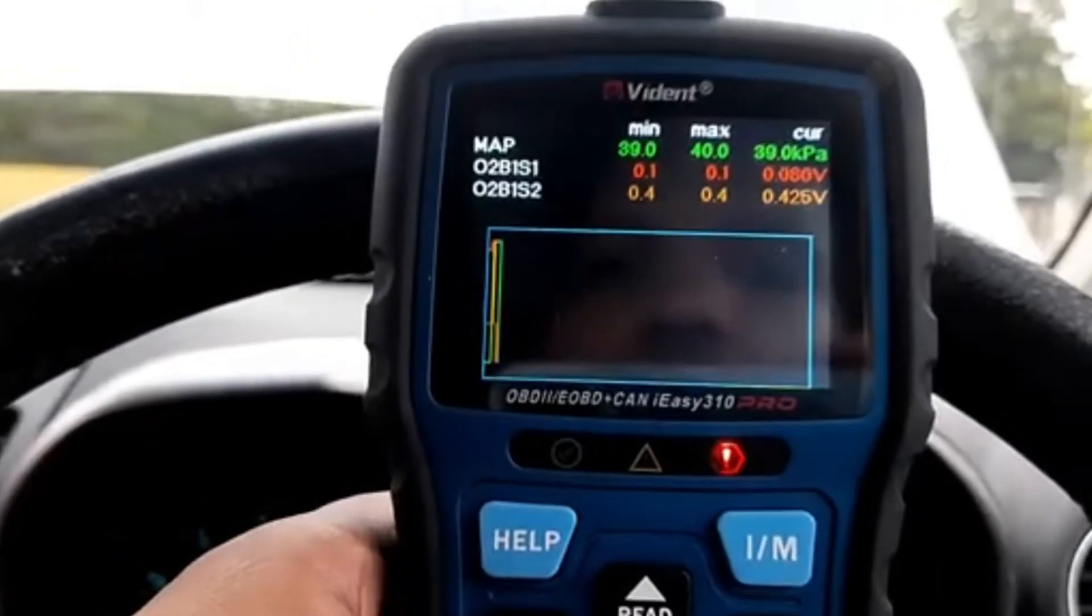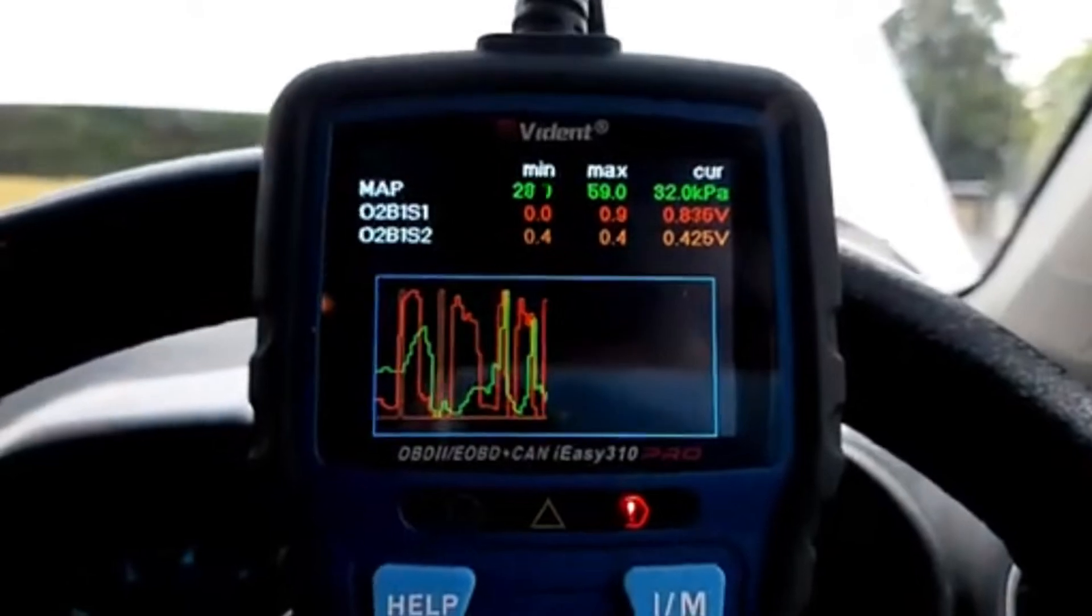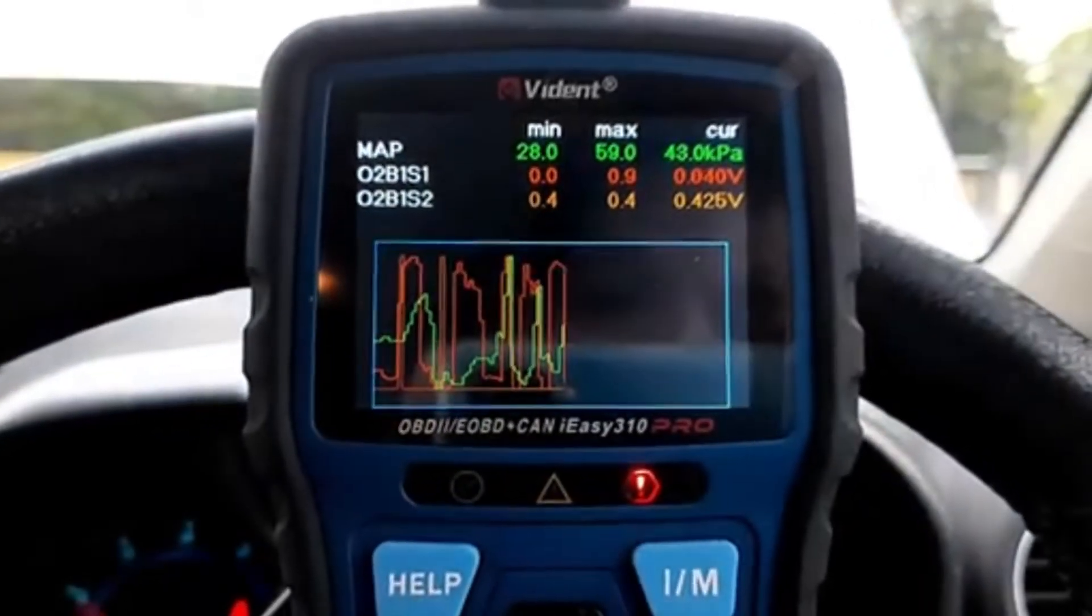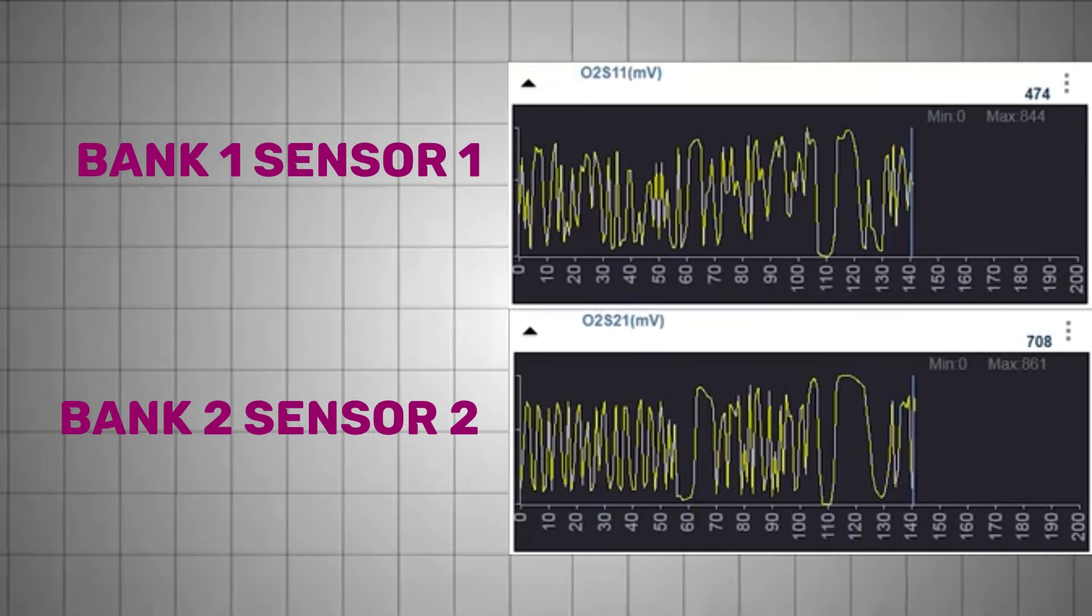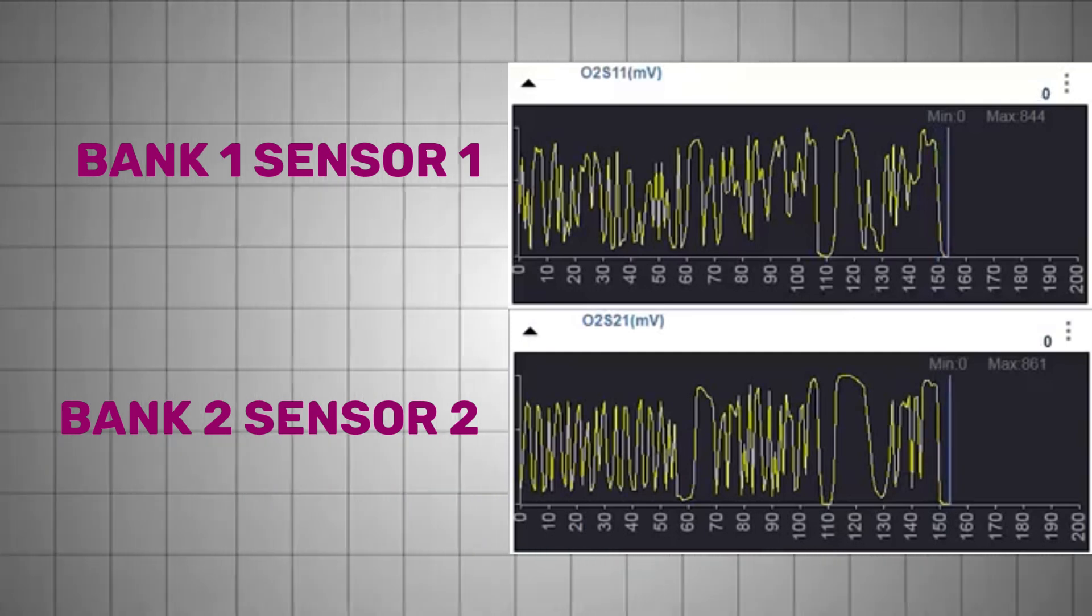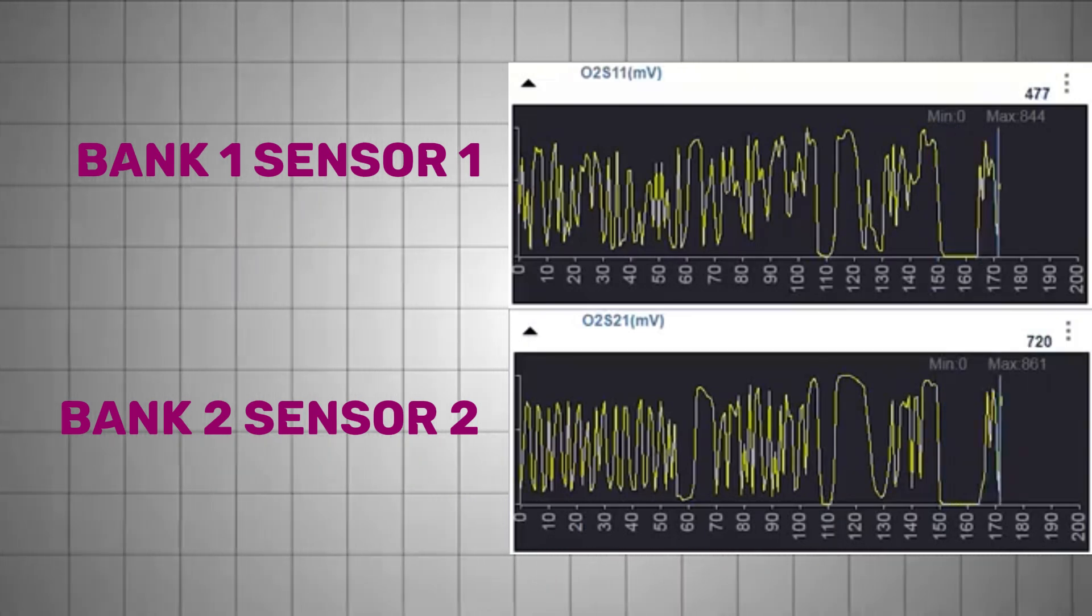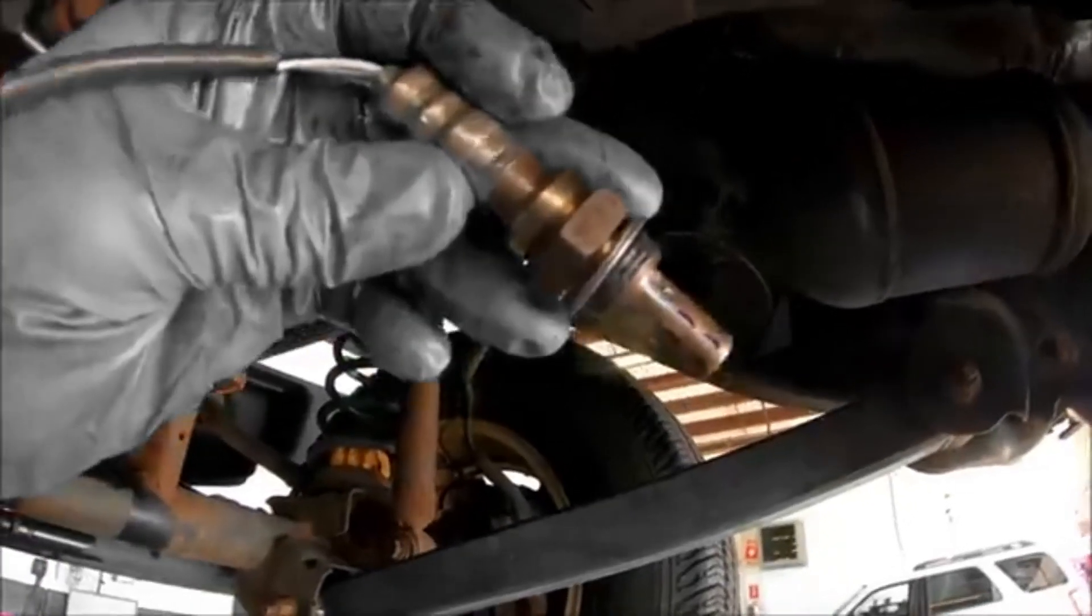For upstream sensors, those located before the catalytic converter, a good sensor should produce a fluctuating signal that moves quickly between approximately 0.1 volts and 0.9 volts. That fluctuation indicates the sensor is actively switching between rich and lean mixtures. If you're driving and the signal is sluggish, stuck, or not switching at all, then you may be looking at a degraded or failed sensor.